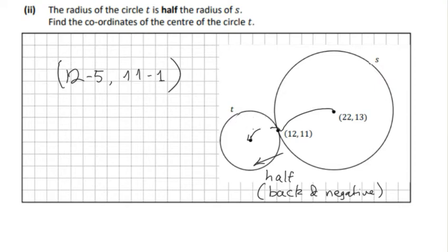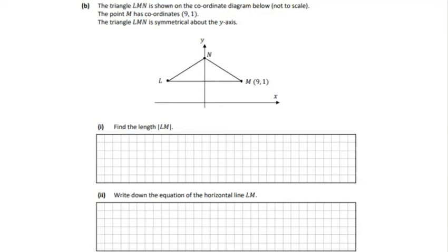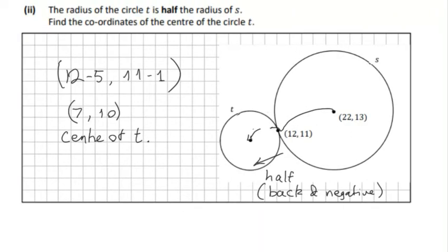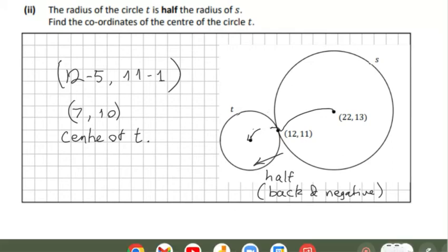So we're going to get a final answer of (7,10), and that's the center of T. I hope you enjoyed the maths today on question 2 on the circle. There will be more videos on paper 2 on the way, so please look out for them. Thank you for joining Maths Plus.